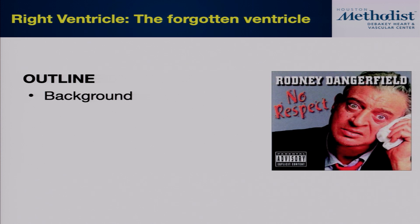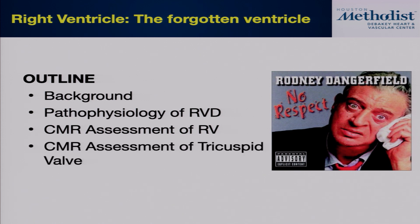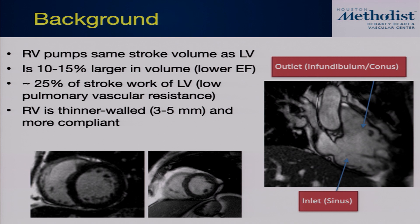Here's the outline of my talk. One thing fellows will notice is that if you look back at any lecture series 10 or 20 years ago, there was very little talk on the right ventricle. We're beginning to see much more focus on the RV and right-sided heart valves. I'll cover background, pathophysiology of RV dysfunction, CMR assessment of the RV and tricuspid valve. I've specifically left out the pulmonic valve because Dr. Duarte will touch on pulmonic regurgitation in her talks on imaging of adult congenital heart disease.